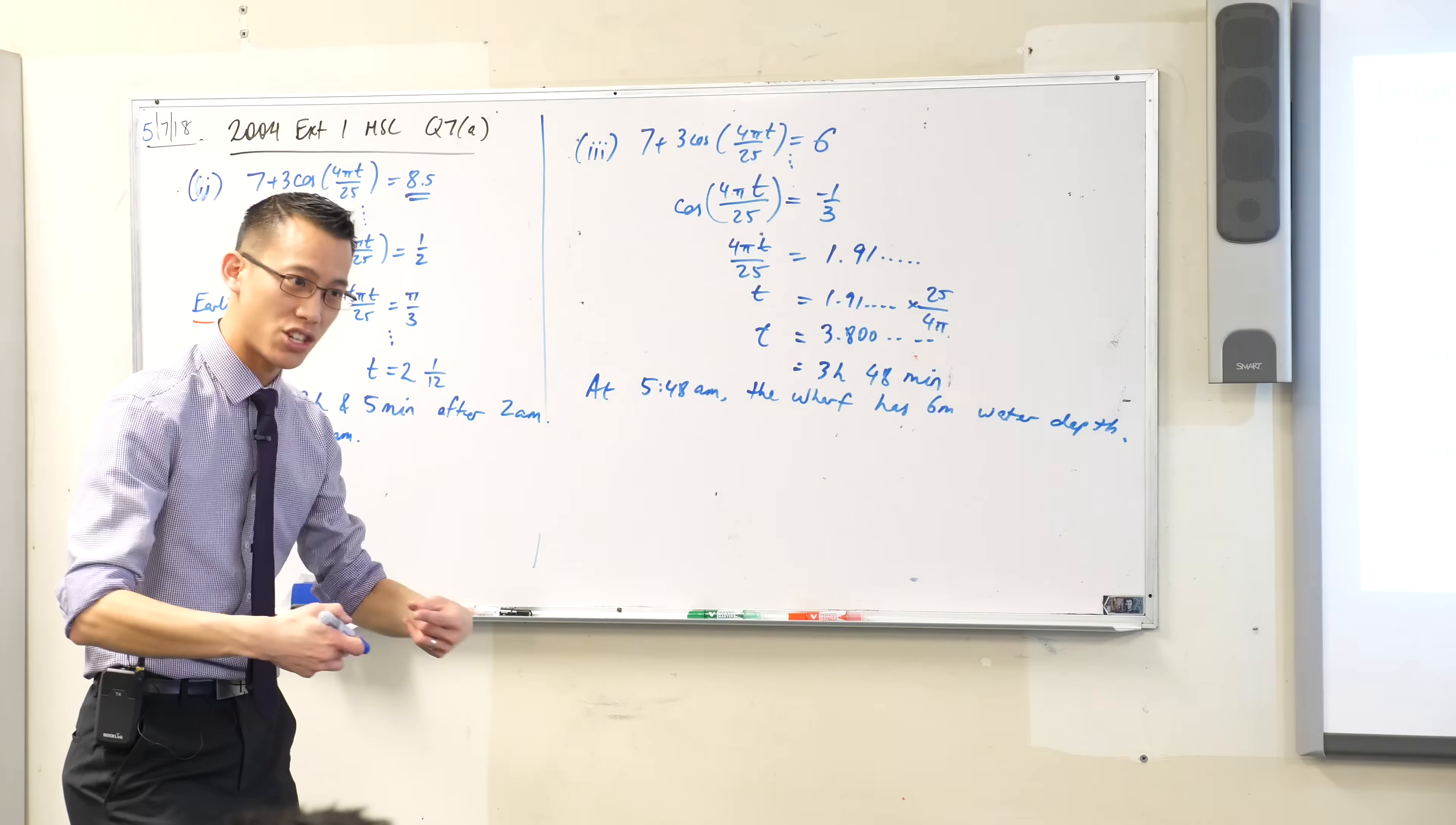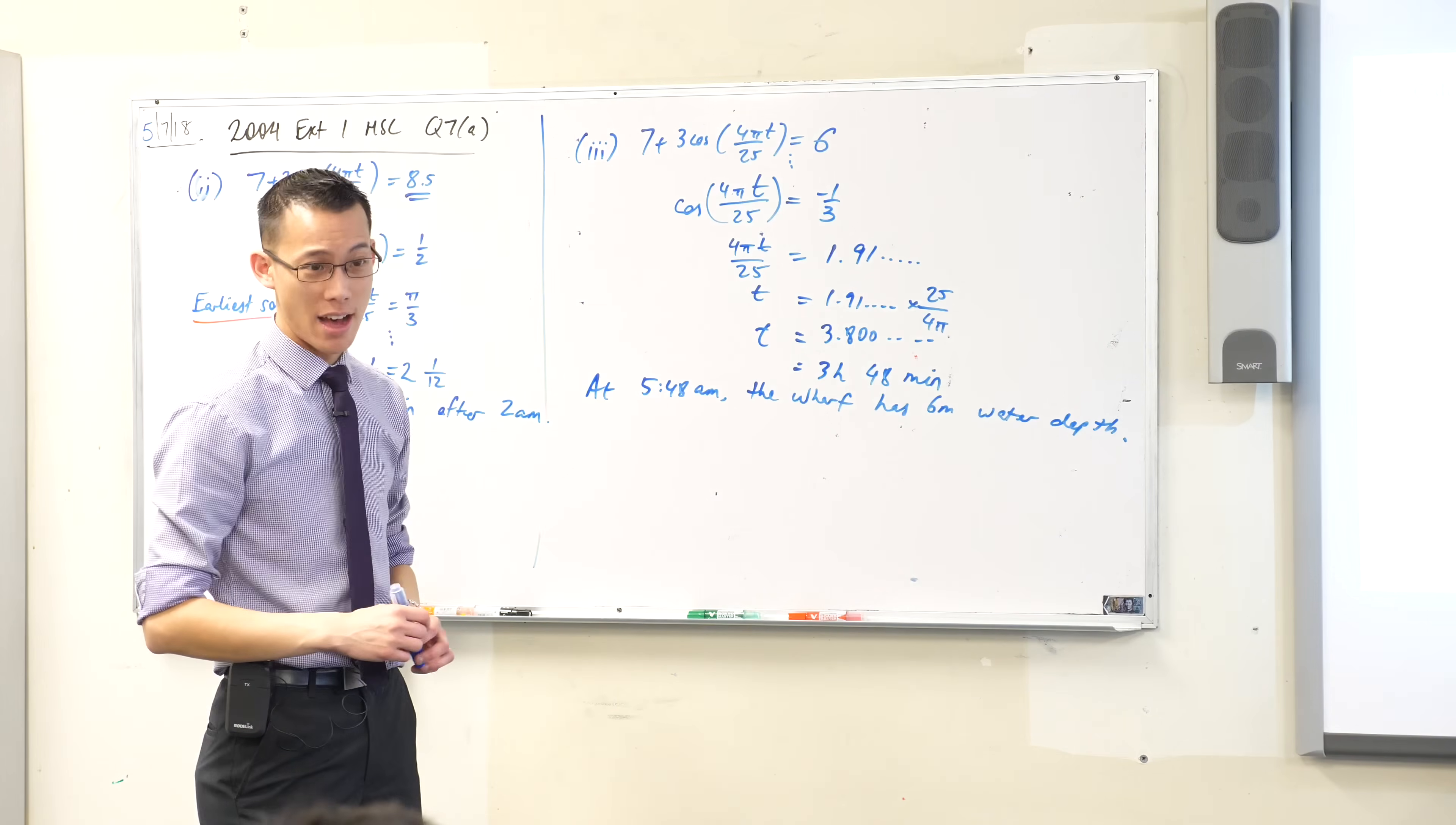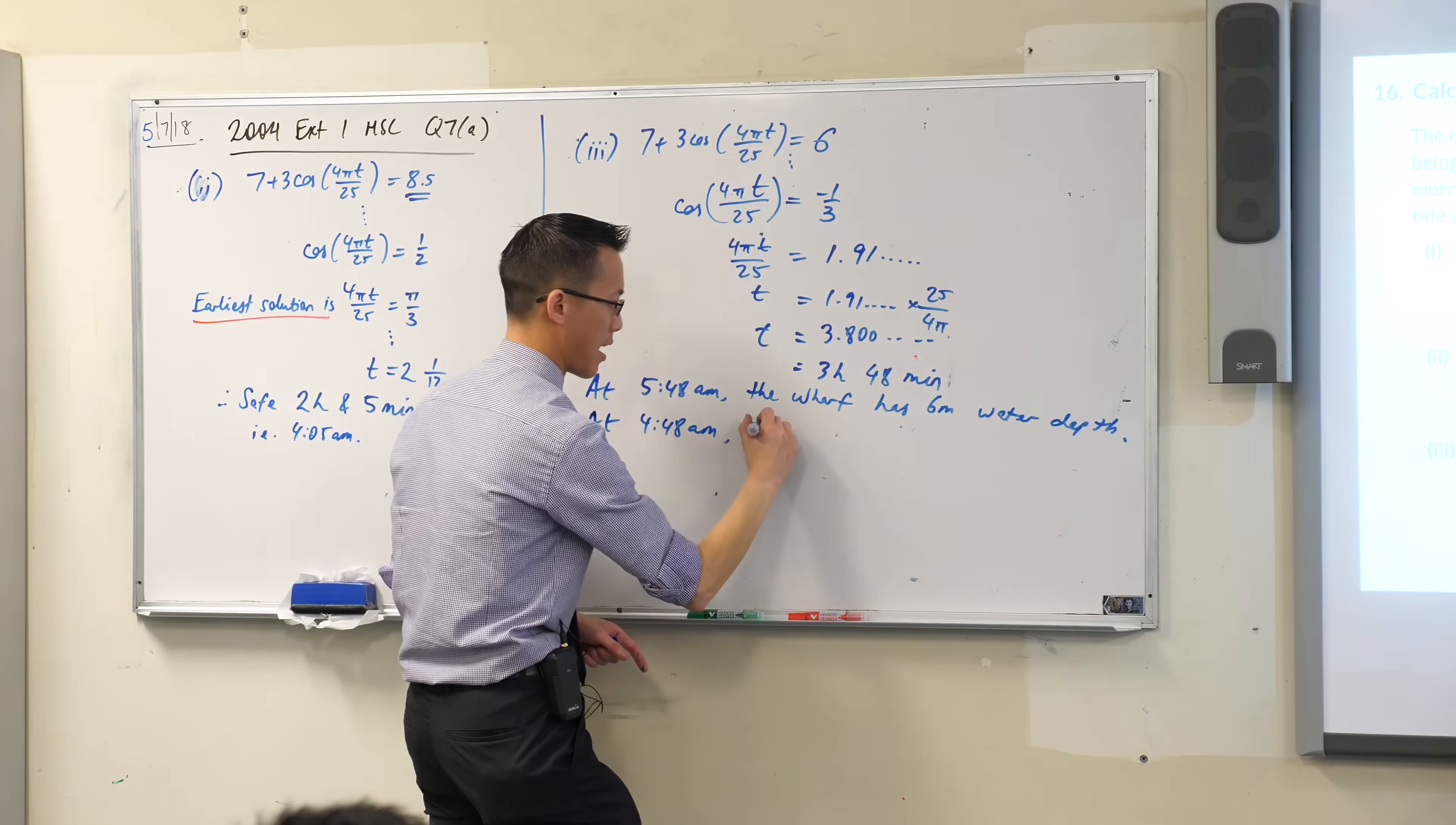Now go look at the question again. What is the relationship between the wharf's time and the harbour entrance's time? Read carefully. Second sentence. Can you read it with me? However, tides at the harbour entrance occur one hour earlier than at the wharf. So 5:48, it's 6 meters at the wharf. But this happened an hour ago at the harbour entrance where it really matters. So what time is an hour ago? 4:48. This is not the wharf anymore, this is the harbour entrance, which is where I'm actually interested in.